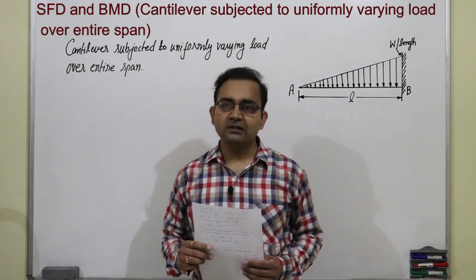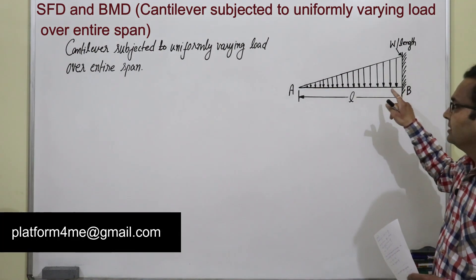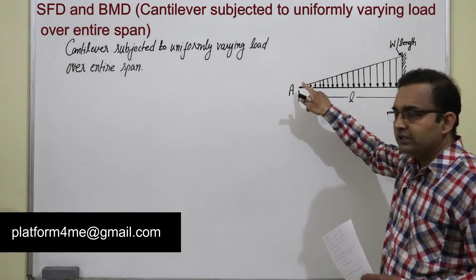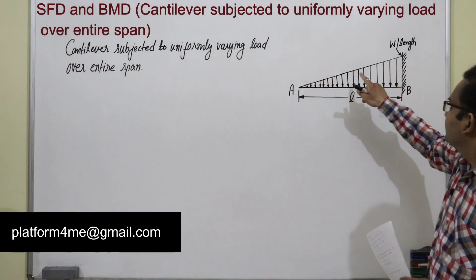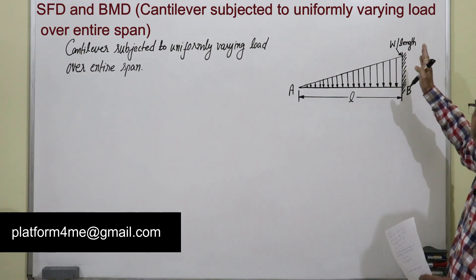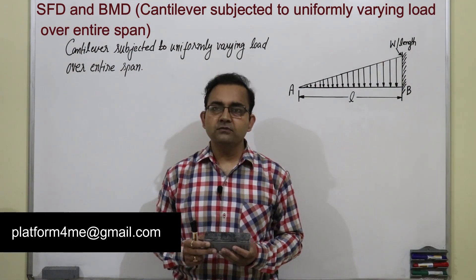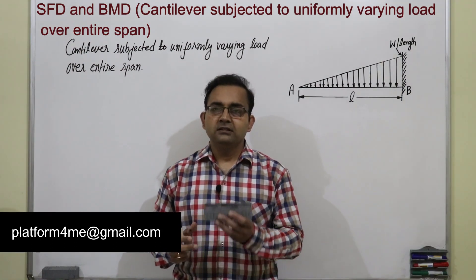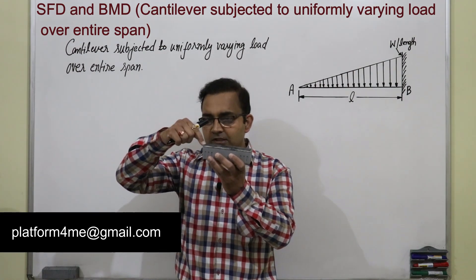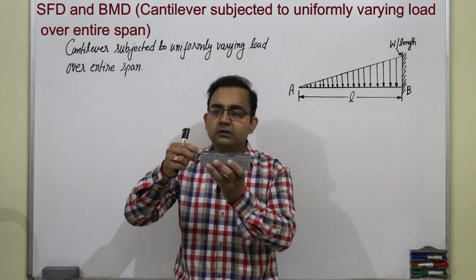Now we will solve this numerical. We can see here, AB is a cantilever beam. At the free end, the load is 0, and the load is increasing uniformly towards the right side. At the fixed end, its intensity is W per unit length.